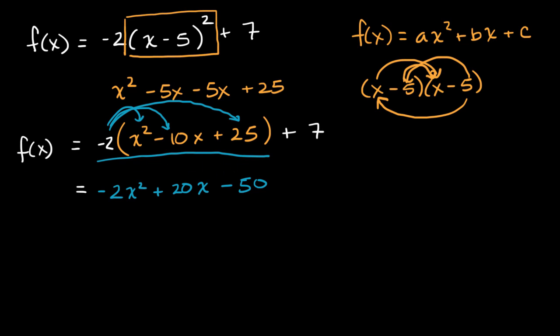And then last but not least, we want to add seven. And so all of this, f of x, is going to be equal to negative two x squared plus 20x.